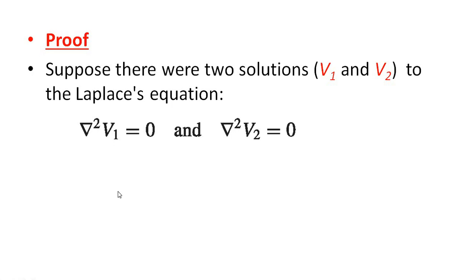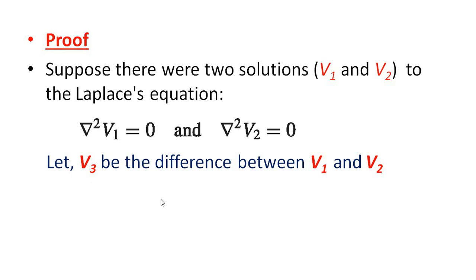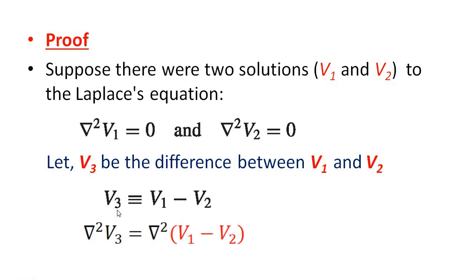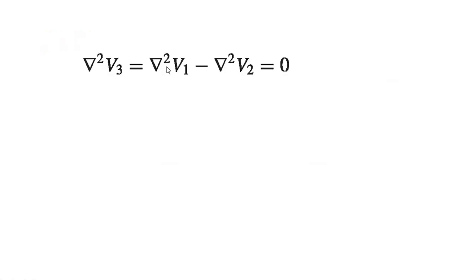If so, del squared V1 equal to 0 and del squared V2 equal to 0. Let V3 be the difference between V1 and V2. Then V3 equal to V1 minus V2, and del squared V3 equal to del squared of (V1 minus V2), which equals del squared V1 minus del squared V2, and this will finally be 0.